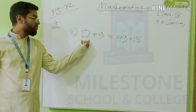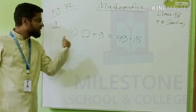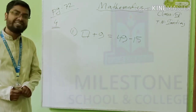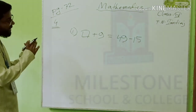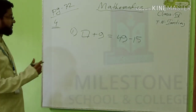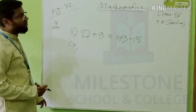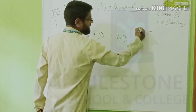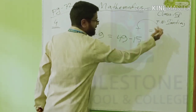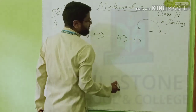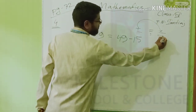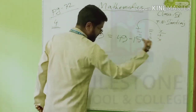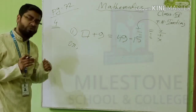We have to find out the value of this blank. We have to solve the solution. Already we know: in an equal sign, if any positive number changes and goes to after the equal sign, it becomes negative. If negative, it becomes positive. If division, it becomes multiplication. If multiplication, it becomes division.